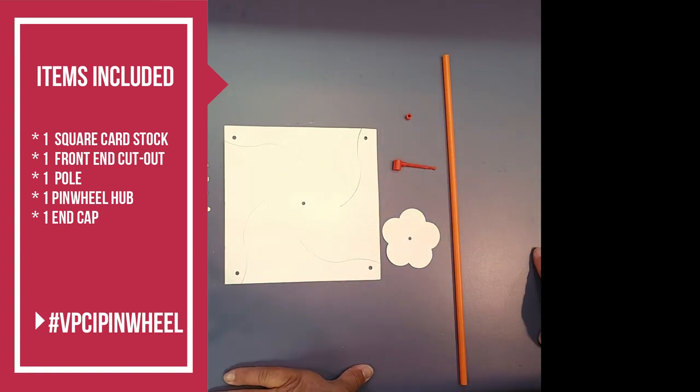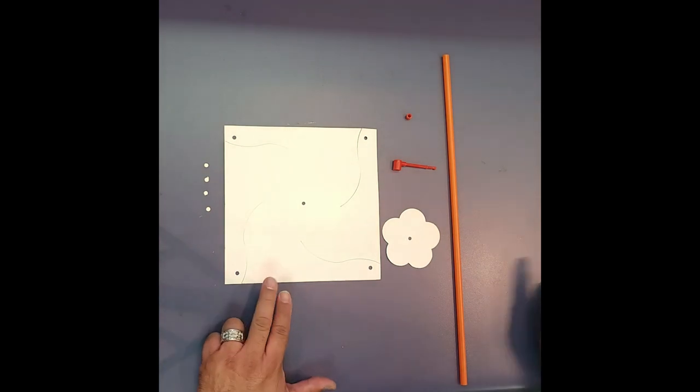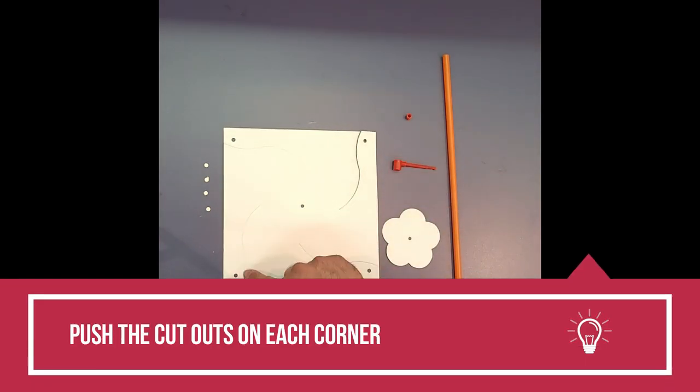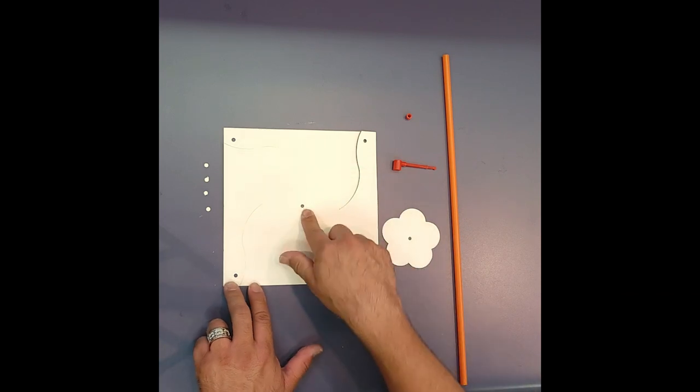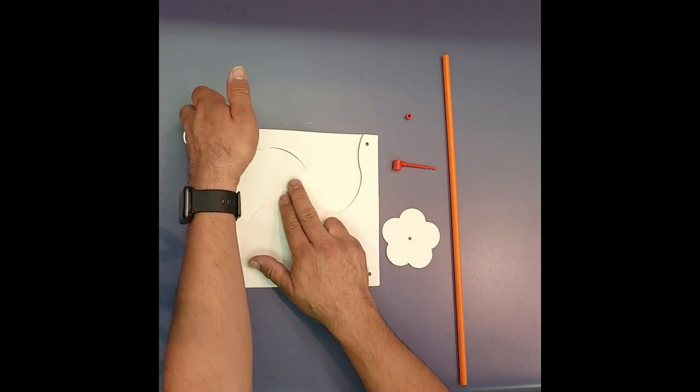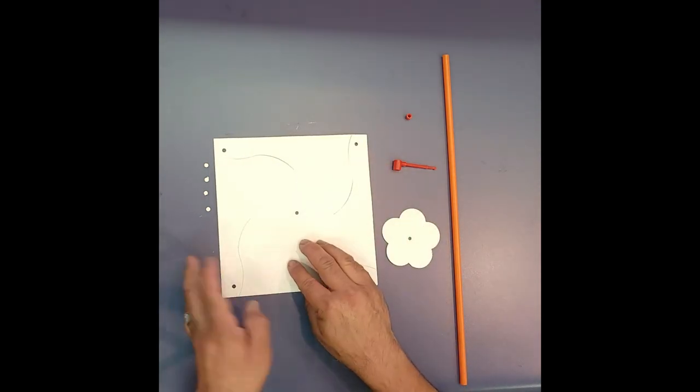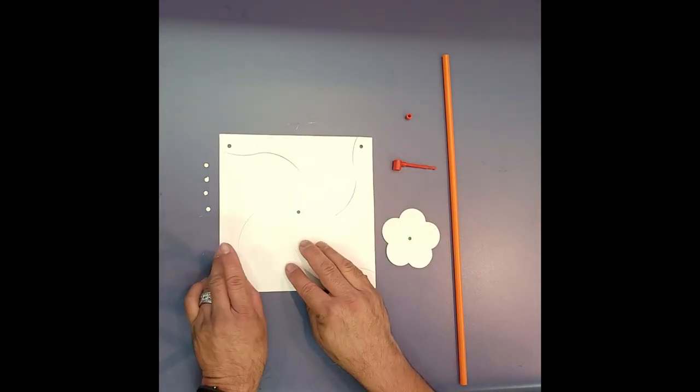The easiest way to assemble this is make sure that you push out the cutouts that are on each corner and in the middle. And just to make sure that the pedals are already pre-cut, make sure that they're already taken out and the lines are ready to go.